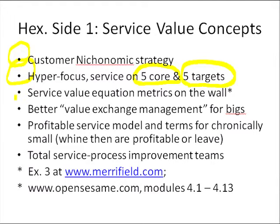I would then ask: specifically for this niche, what is our service value equation metrics, and where do we put them on the wall, and how do we score them day in, day out? And there may be eight of them, or six of them — it's contextual, depends on the particular niche.